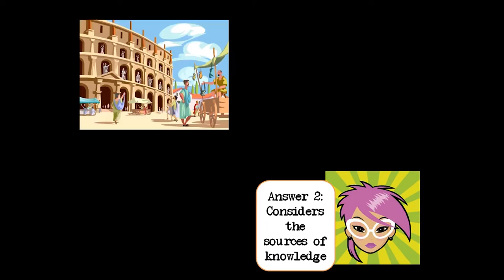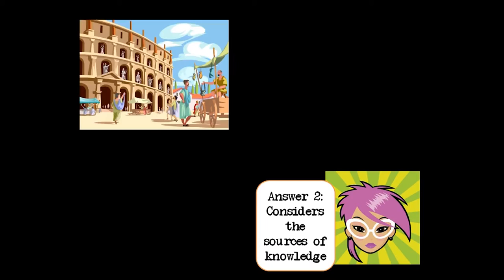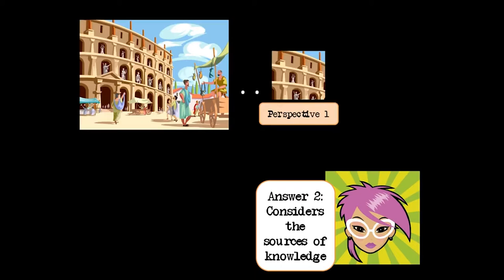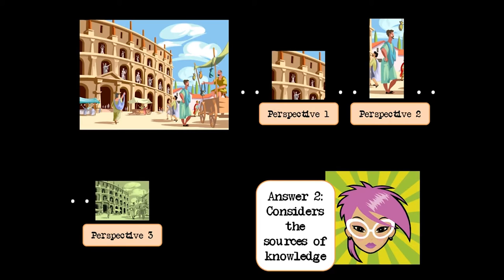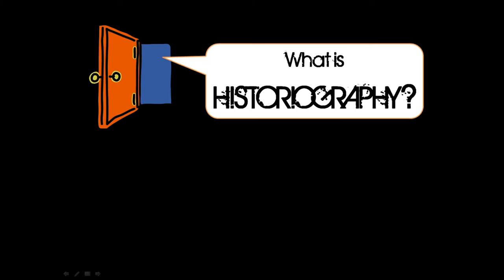What if instead we considered the sources of our knowledge? Ancient Rome happened — that was the event. But there was this one person who had a perspective on a single part of that ancient Roman scene, and later on someone else said they want to talk about a different perspective of that same historical event. And someone else said they want to color the whole thing totally differently. That seems a little more complex, as if history were seen through the window of different perspectives that we have.